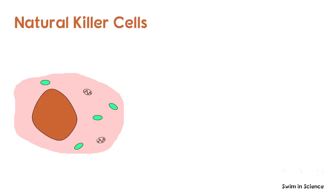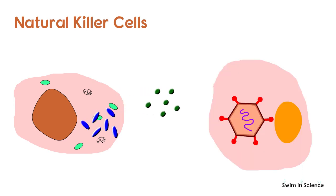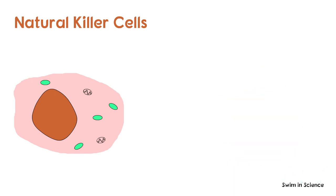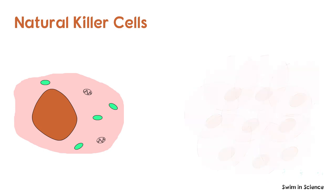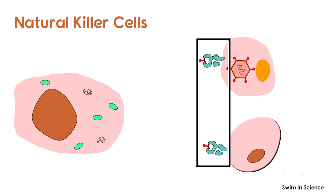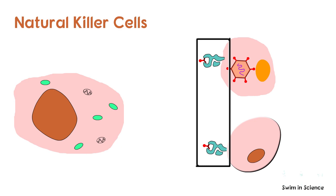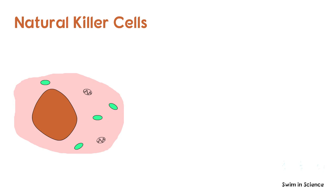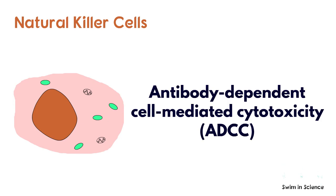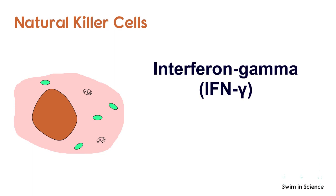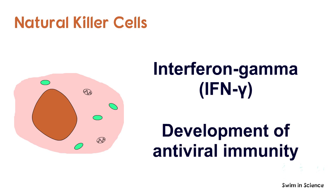Natural killer cells do not directly attack pathogens. They release perforins and granzymes — proteins that cause the lysis of target cells and induce apoptosis in infected cells. They are also involved in the destruction of tumor cells. Natural killer cells recognize unusual profiles of antigens displayed by tumor cells or virus-infected cells, and also recognize cells coated with anti-tumor or antiviral antibodies, destroying the target cells — a process known as antibody-dependent cell-mediated cytotoxicity. Natural killer cells are also an important source of a cytokine called interferon gamma, which helps in the development of effective antiviral immunity.